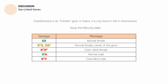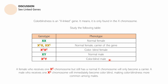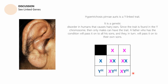For males, remember that color blindness is X-linked. If the male's X chromosome has no color blindness trait, he is normal. But if his single X chromosome carries the color blindness trait, he immediately becomes color blind. So a female who receives one X chromosome with color blindness but still has a normal X chromosome will only be a carrier. A male who receives a color blind X chromosome will immediately become color blind, making color blindness a more common phenotype among males.